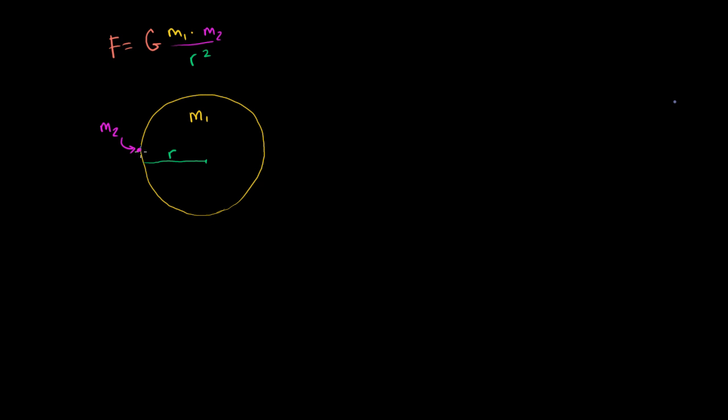Now let me be very clear. You might say, wait, this magenta mass right here is touching this larger mass, isn't the distance zero? You have to be very careful. This is the distance between their center of masses. So the center mass of this large mass over here is r away from this mass that's on the surface.